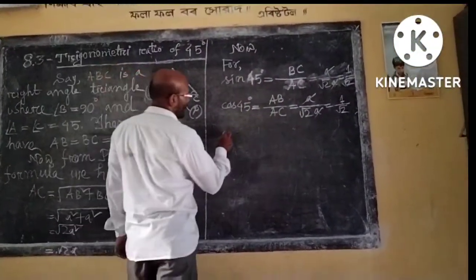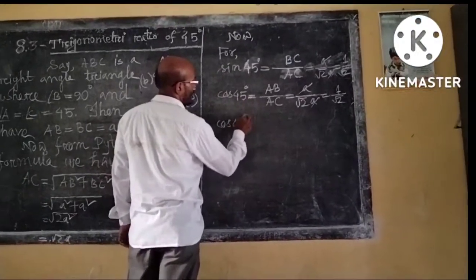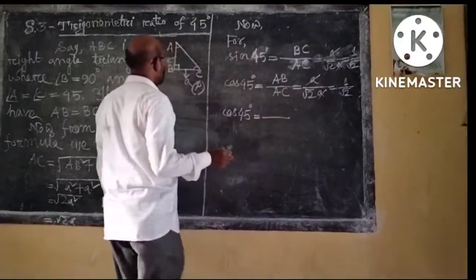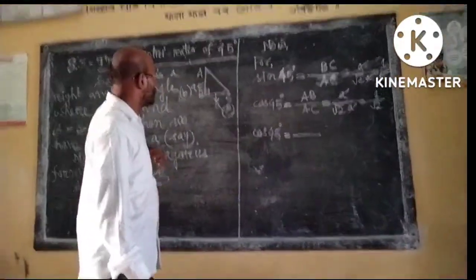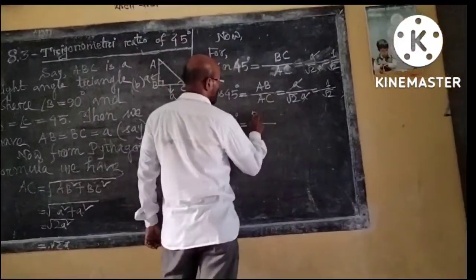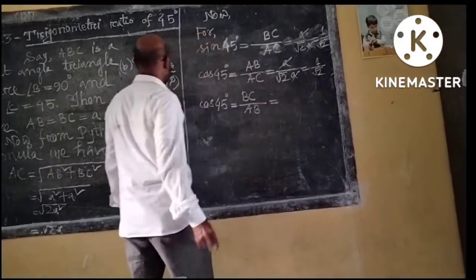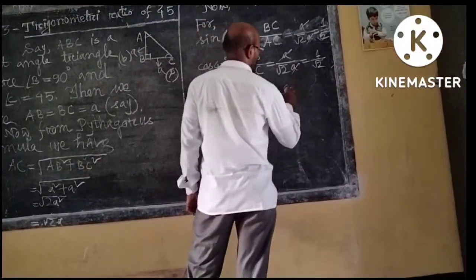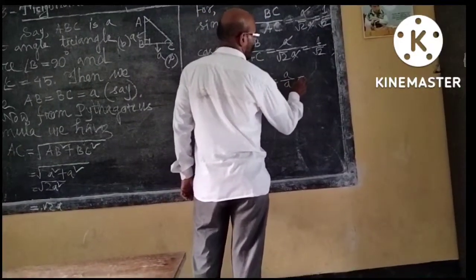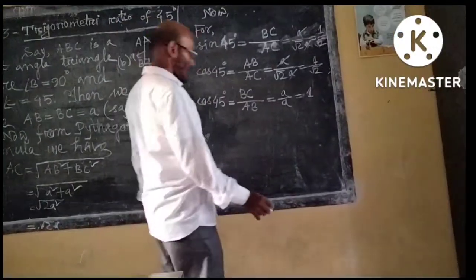Similarly, tan 45 equals perpendicular by base, which is BC by AB. BC is A and AB is also A. After cancelling we have 1.